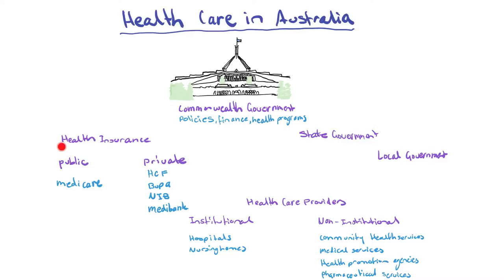On the other side, we have health insurances. We look at public, which is where Medicare comes under, and then private insurances such as HCF, Bupa, NIB and Medibank, which are optional health insurance that people can pay for. We then look at health care providers: institutionalised providers such as hospitals and nursing homes, which are often government funded, and non-institutionalised providers such as community health services, medical services, health promotion agencies and pharmaceutical services.